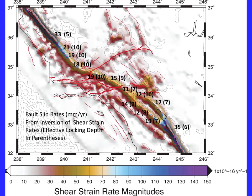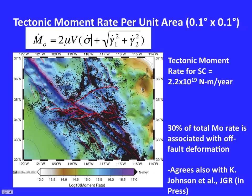Here are estimates all along the fault. Some of these agree with the geology and some actually don't. The slip rates are shown, and their locking depths—coming up shallower than some previous estimates—are shown in parentheses. There's some grumbling about some of these results.